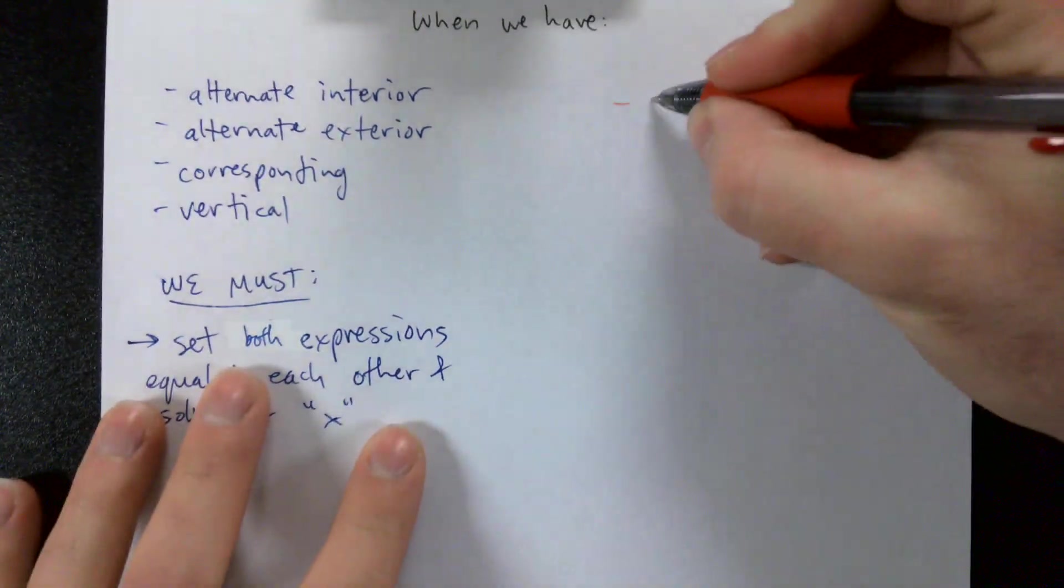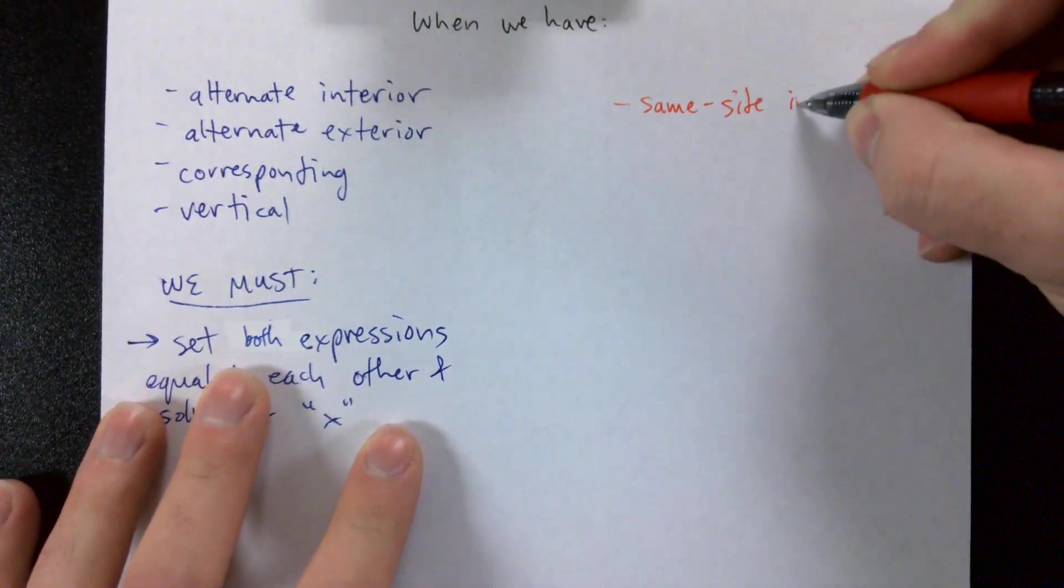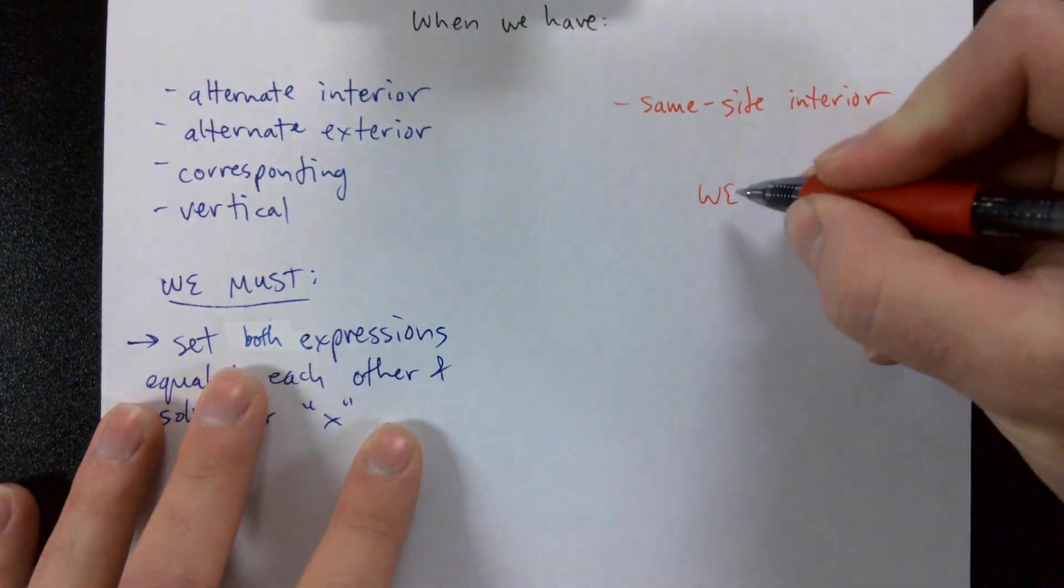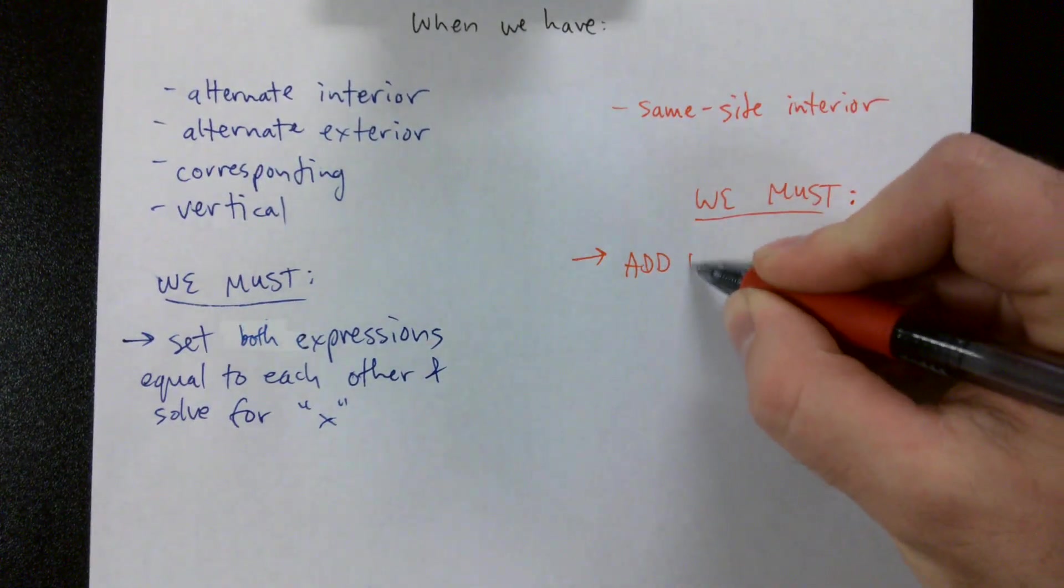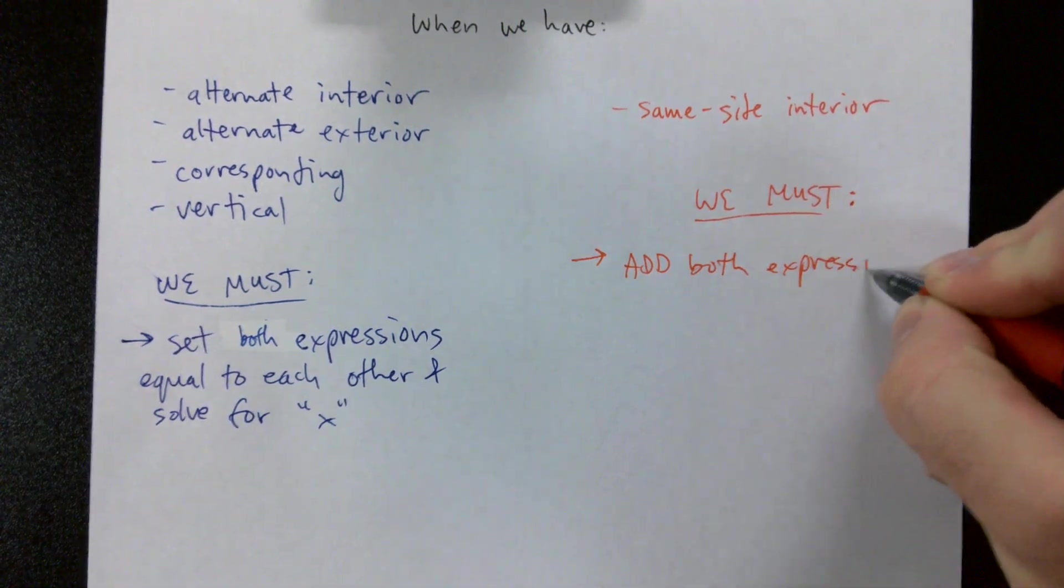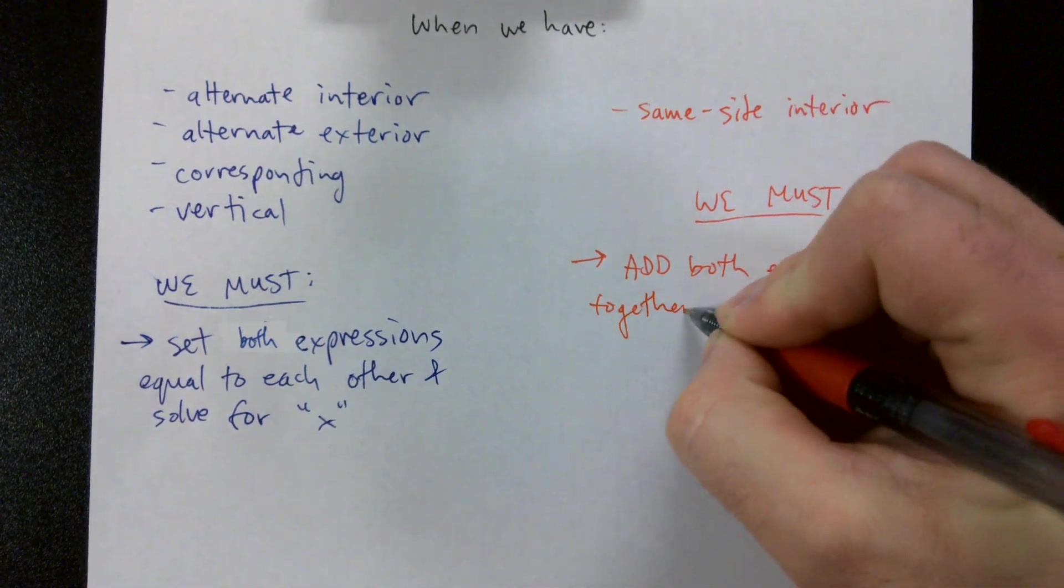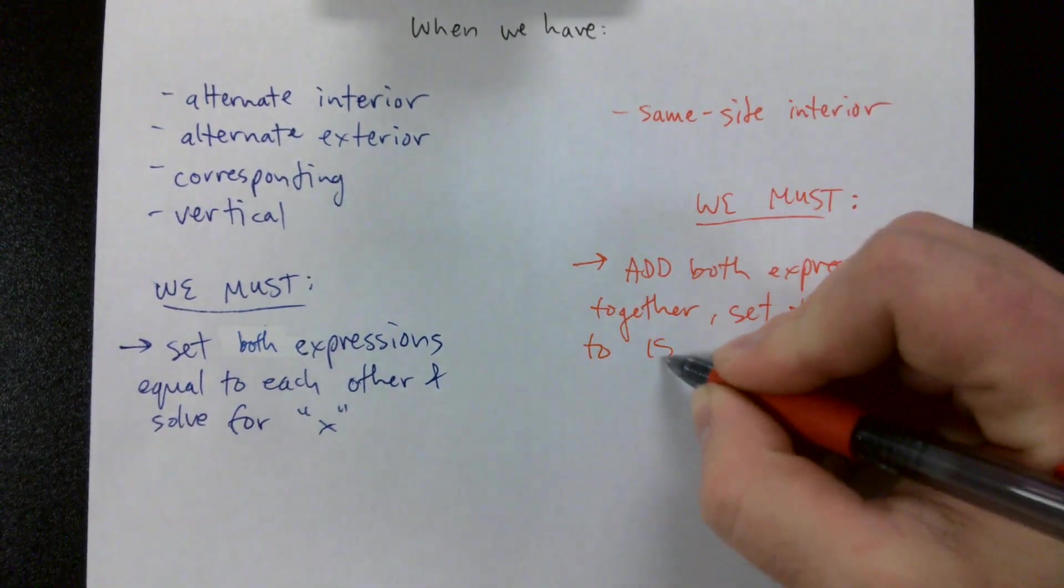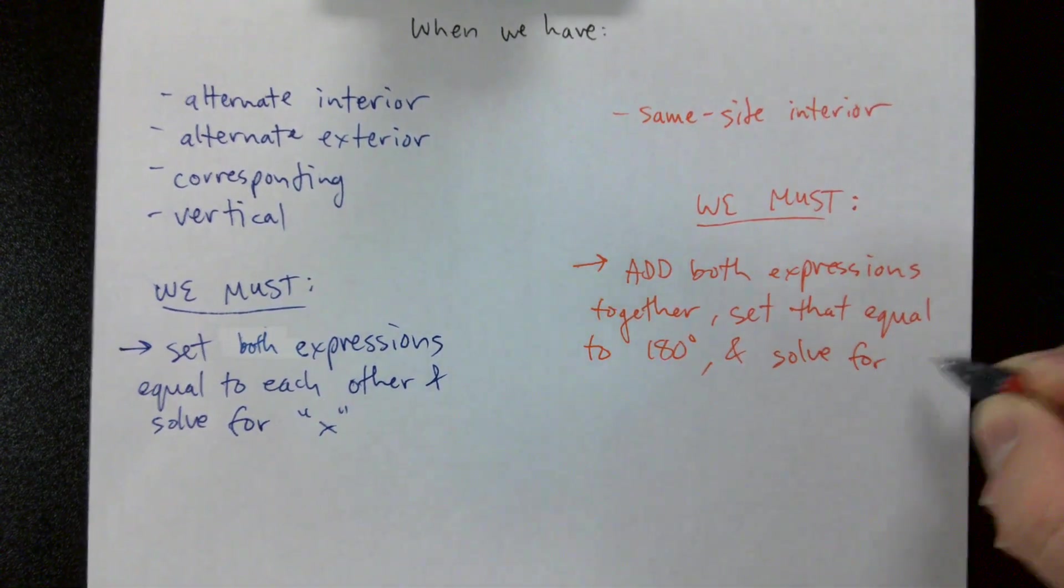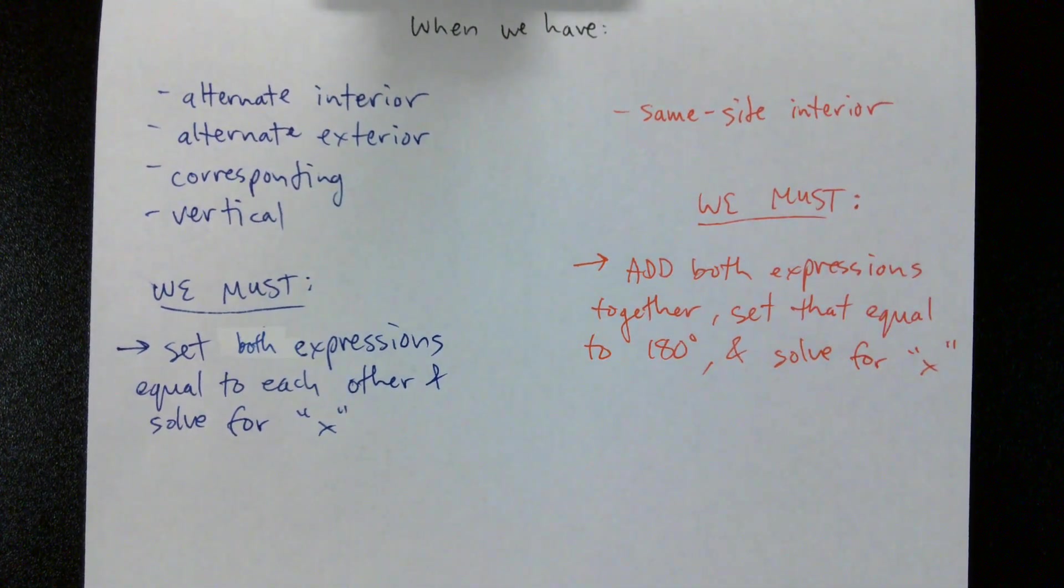But if we have same side interior angles, we've got to do something different. We have to add both expressions together, set that equal to 180, and solve for x. It's almost kind of a recap of 11.1b. We do one thing if we have congruent relationship, we do another thing if we have a supplementary relationship.